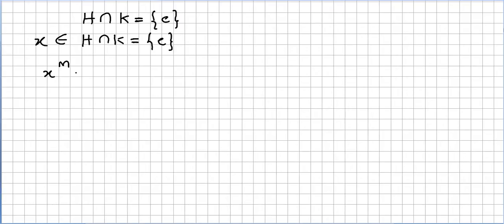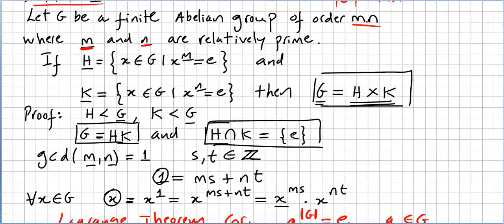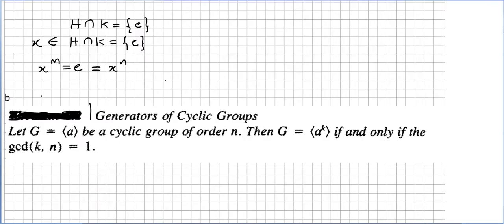So X to the power of M equals the identity, and X to the power of N equals the identity. This follows from our hypothesis: H is the set where X to the power of M equals the identity, and K is the set where X to the power of N equals the identity. So X to the power of M equals E and X to the power of N equals E.